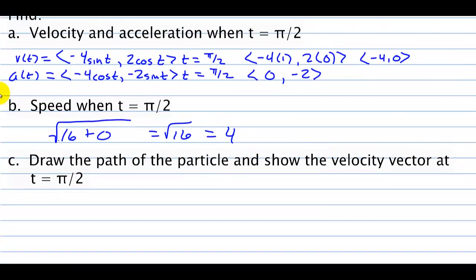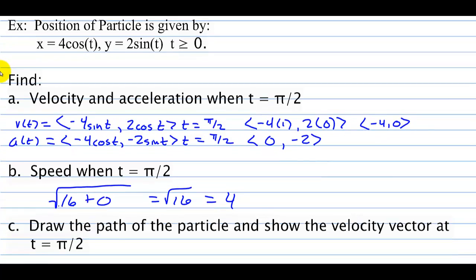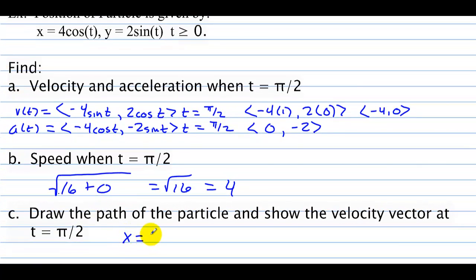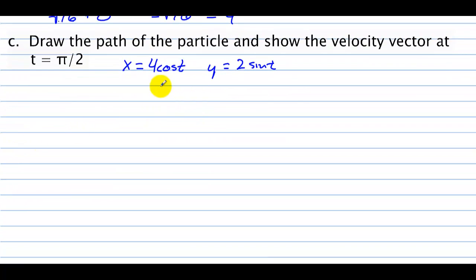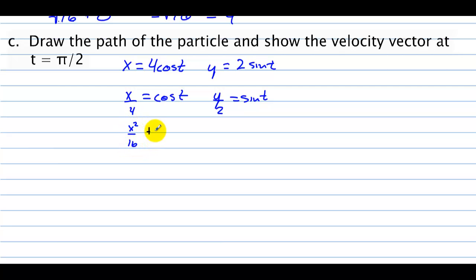Draw the path of the particle and show the velocity vector at t = π/2. Given x = 4 cos t and y = 2 sin t: dividing gives x/4 = cos t and y/2 = sin t. Using the Pythagorean identity cos²t + sin²t = 1, squaring both sides gives x²/16 + y²/4 = 1. That's an ellipse, so the path of the particle is elliptical.